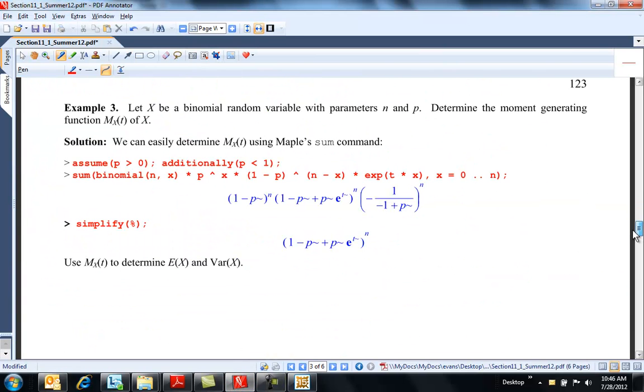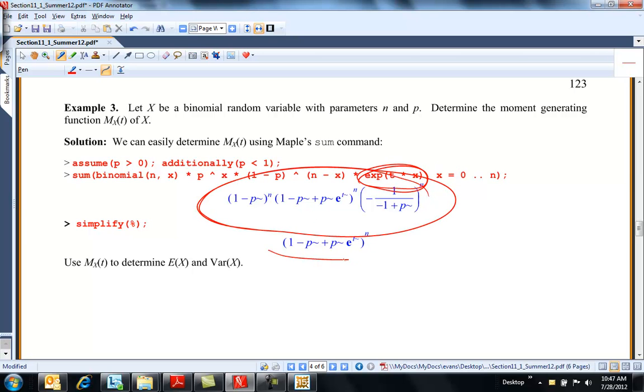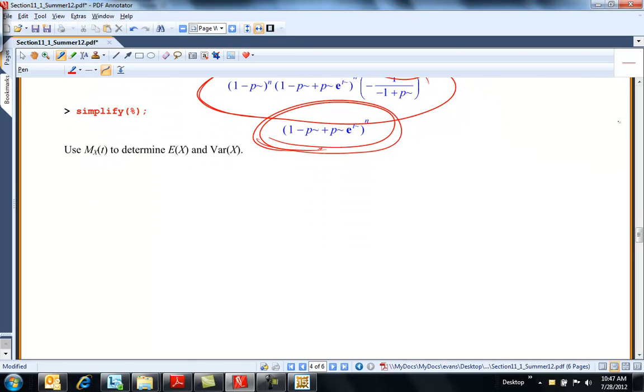Here's a binomial. Remember what a binomial looks like. Here's the probability mass function right there for the binomial. And then I'm just multiplying by E to the TX. I stuck this in Maple and just said, find me a nice sum for this and make it look a little bit nicer. So here's what the moment generating function is for a binomial.